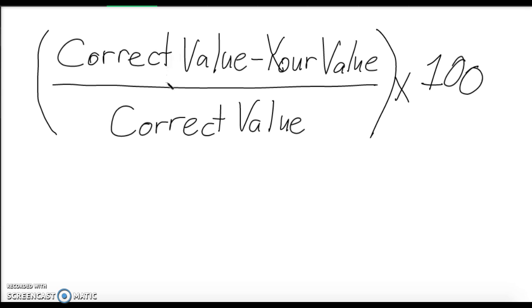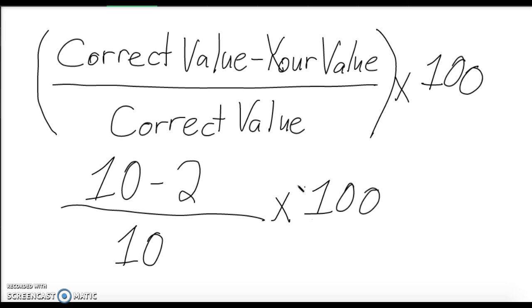Your correct value, let's say I give you a test with 10 questions, and you get 2 wrong. Divided by our correct value is how many we had, how many you could have gotten right, times 100.